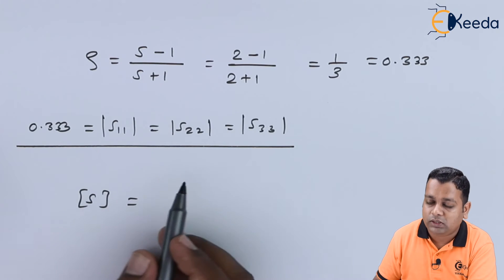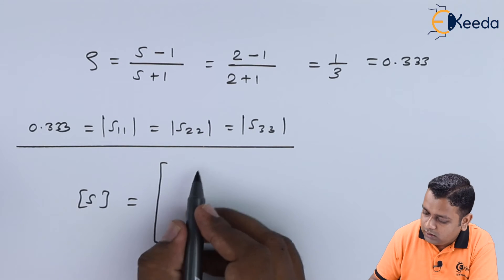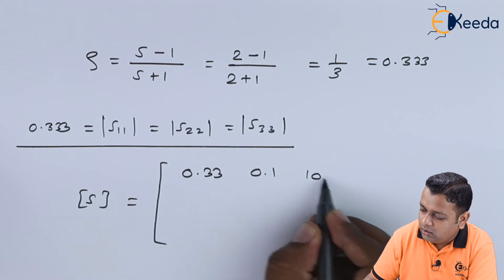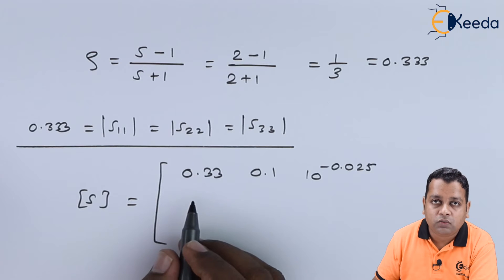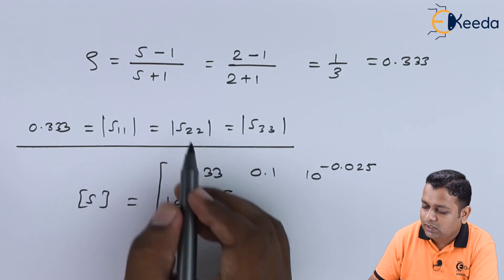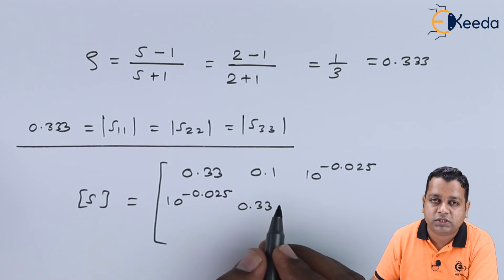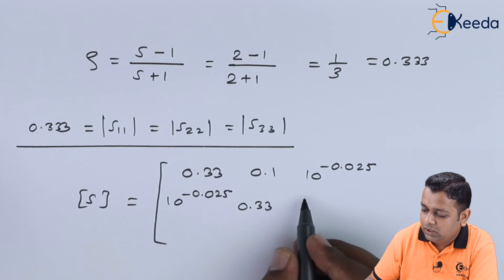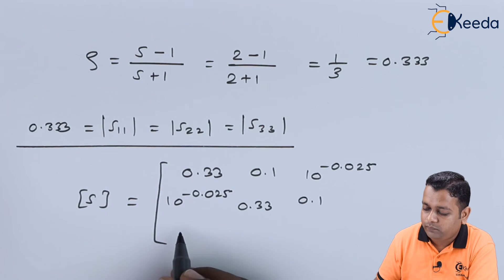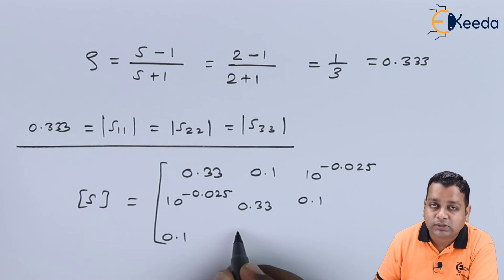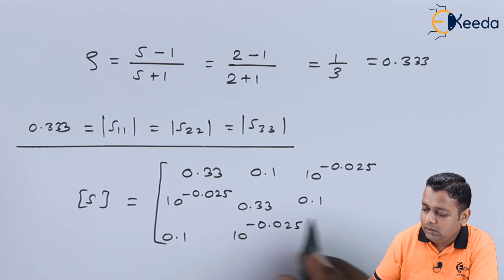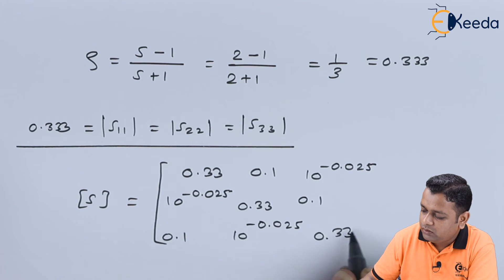The complete 3×3 scattering matrix with substituted values is: Row 1: [0.33, 0.1, 10^(−0.025)]; Row 2: [10^(−0.025), 0.33, 0.1]; Row 3: [0.1, 10^(−0.025), 0.33]. All nine scattering parameters have been evaluated.